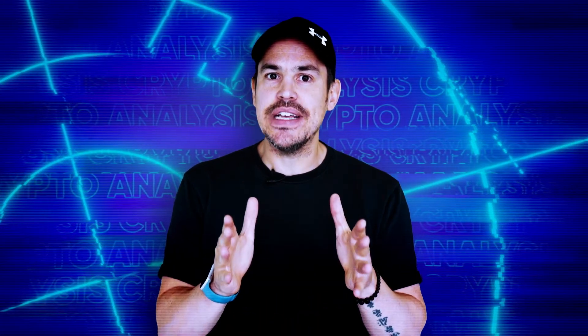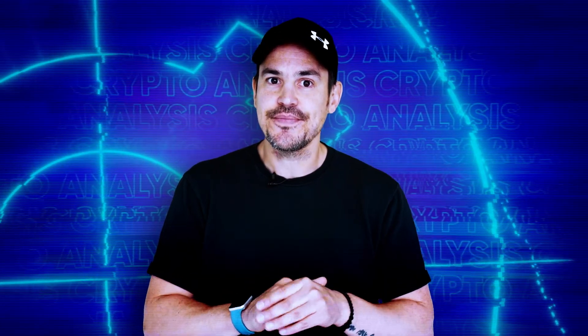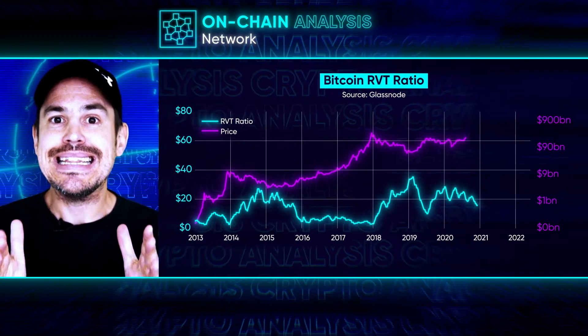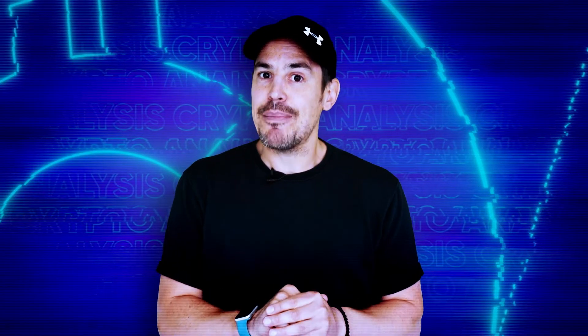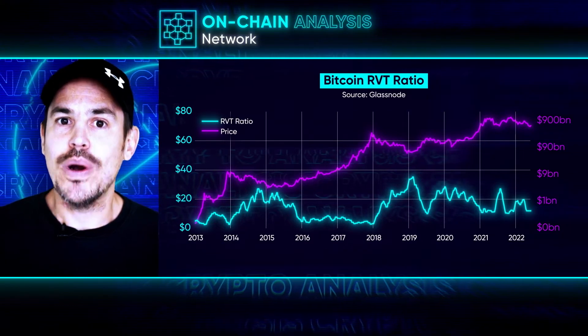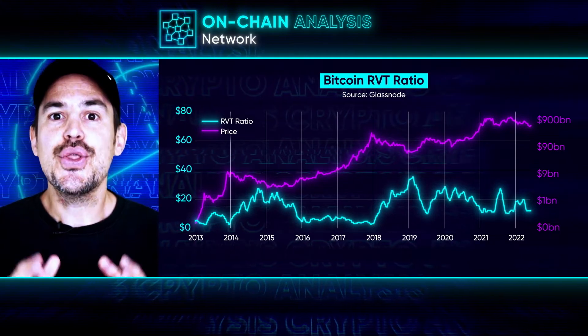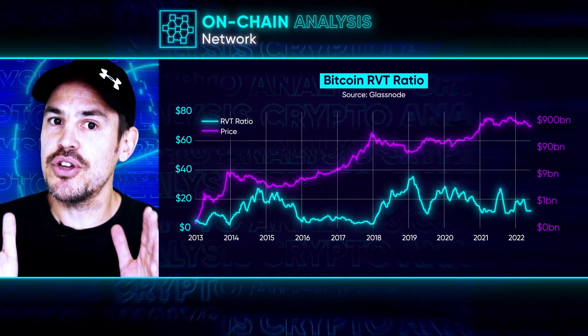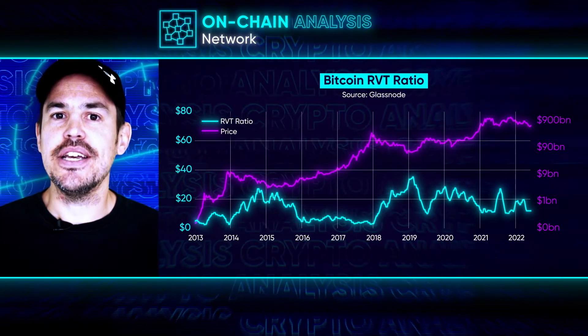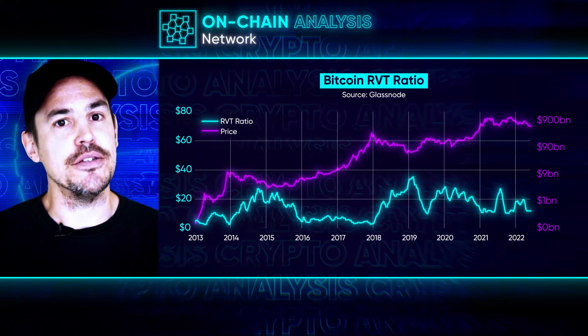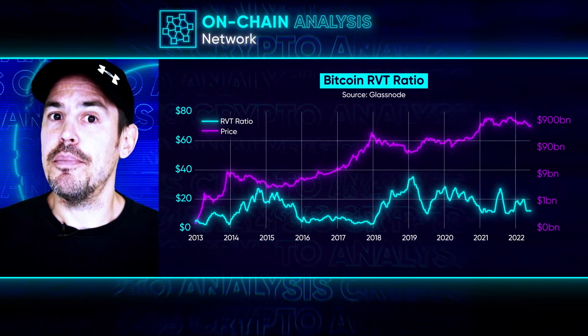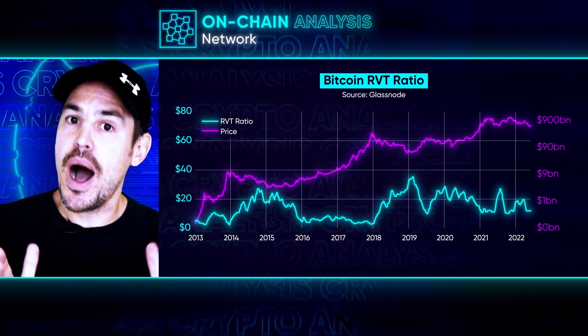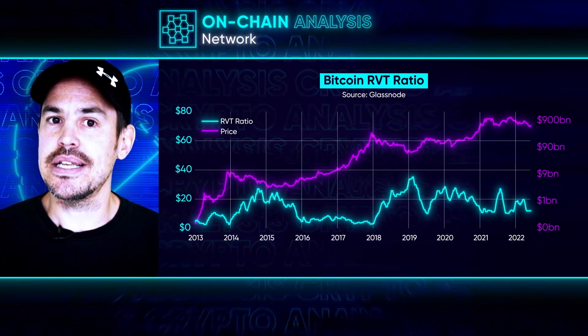A useful graph to understand is the RVT ratio — the realized value to transaction ratio — which could be compared to a company's price-to-earnings or PE ratio. It gives us a view on whether the demand right now for Bitcoin justifies the current realized market cap. The realized market cap takes the price each Bitcoin was last transacted for, as opposed to the standard market cap which multiplies all coins by the current price. The realized market cap is then divided by the transaction volume, telling us how much demand and utility the network currently has. Through the first 10 years of Bitcoin, we see a strong correlation between transaction volumes on-chain and the price of Bitcoin. In this graph, the RVT ratio is the blue line and it's inverse — so when it's going down, this is bullish as transaction volume is going up compared to the realized market cap. When it's going up, it's bearish, and at the peak it's been a good indicator of price cycle bottoms in recent times.